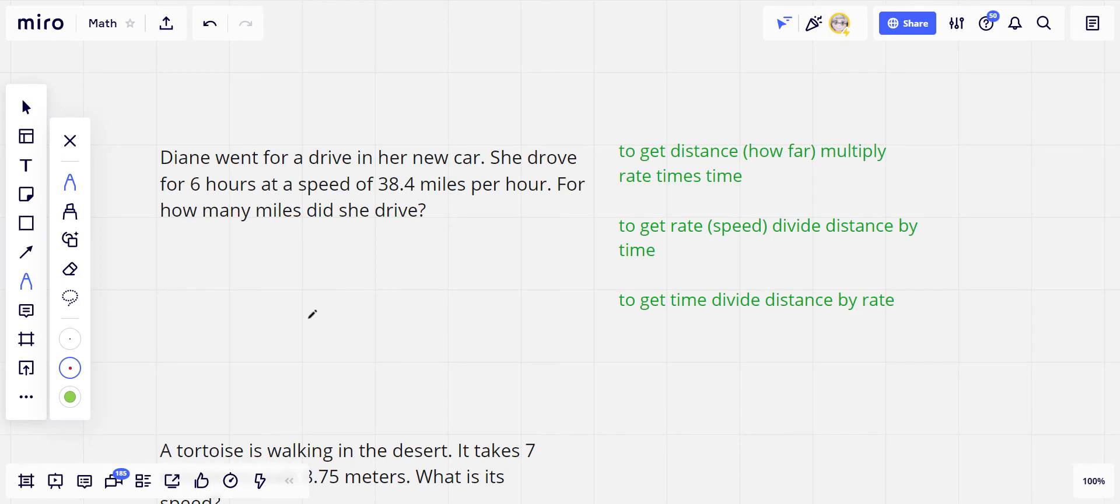Here we have some word problems that are about distances, rates, and times - like how fast a car is going or how long it takes to get somewhere. These problems are all based on this formula: distance equals rate times time.